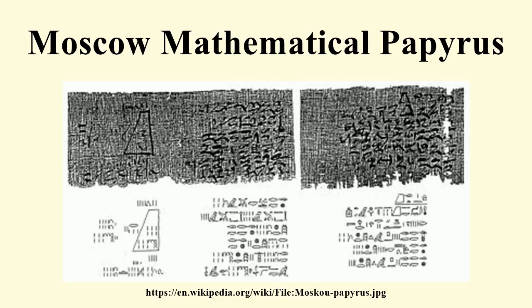"See, it is 56. You will find it right." The solution to the problem indicates that the Egyptians knew the correct formula for obtaining the volume of a truncated pyramid. Researchers have speculated how the Egyptians might have arrived at the formula for the volume of a frustum, but the derivation of this formula is not given in the papyrus.